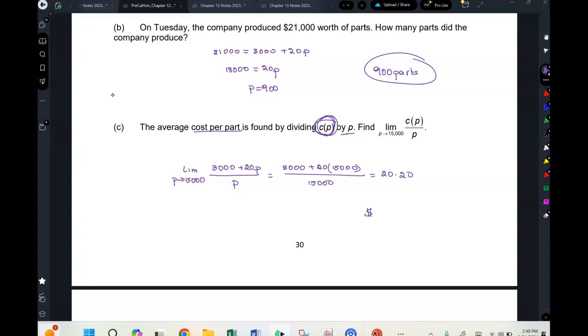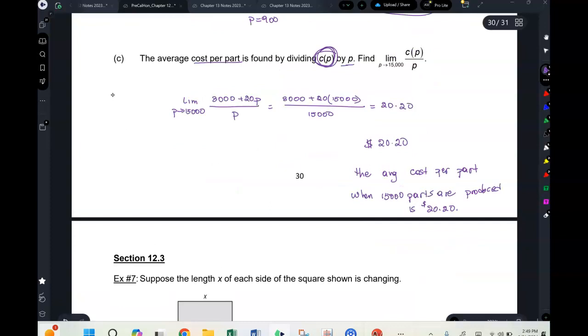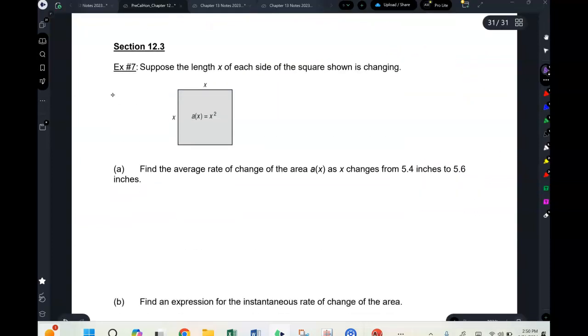So the average cost per part when 15,000 parts are produced is $20.20. So if you had made only 5,000, the average cost would have obviously been more. So this is something that's changing by p. Okay, so lastly let's do this 12.3 problem.